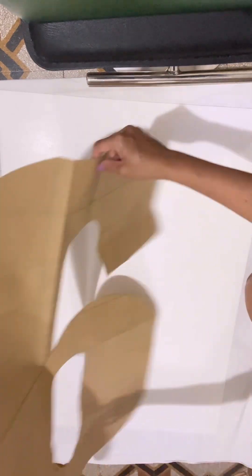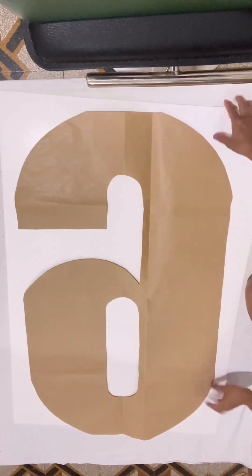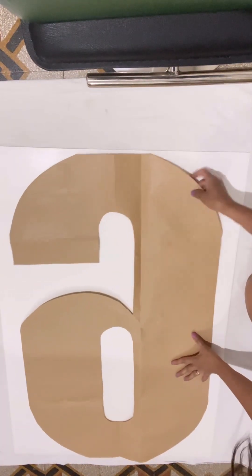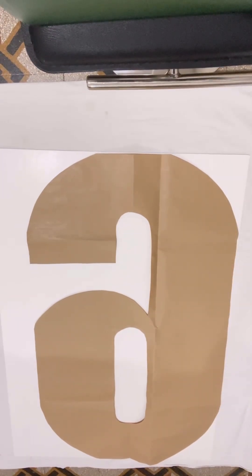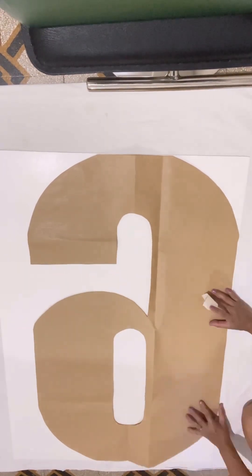Cut it and trace it onto your foam board or styrofoam board, or whatever material you have. Don't forget to flip the pattern when tracing. I use masking tape to fix the pattern on the board before I start tracing.